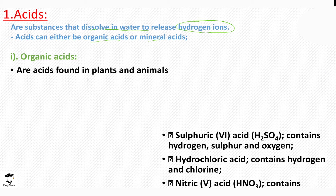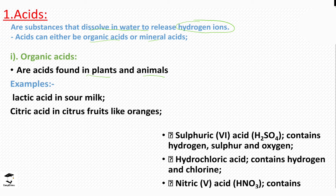Organic acids are the acids that are found in plants and animals. Any acid that is in animals or plants is usually referred to as an organic acid. For example, we have lactic acid in sour milk — when milk is allowed to ferment, the acid produced in the sour milk is referred to as lactic acid.